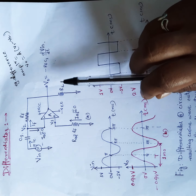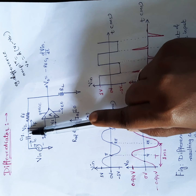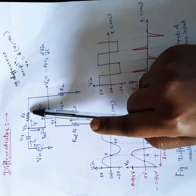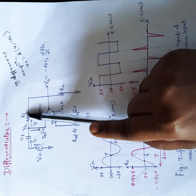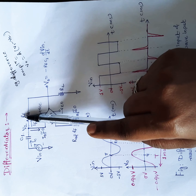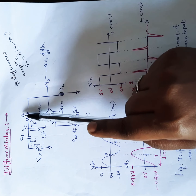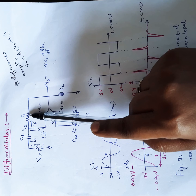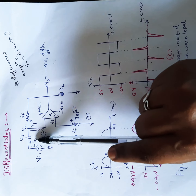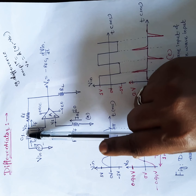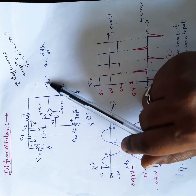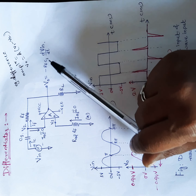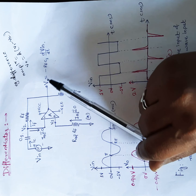We know that in the integrator, the input signal is given to the input terminal through resistor R1 and the capacitor is in feedback. We can design the differentiator by simply interchanging the feedback capacitor and resistor — the capacitor now comes to the input terminal and the resistor is placed in the feedback circuit. This is the differentiator circuit where the capacitor is in series with the input signal, giving an output that is the differential of vin, that is d/dt of vin.